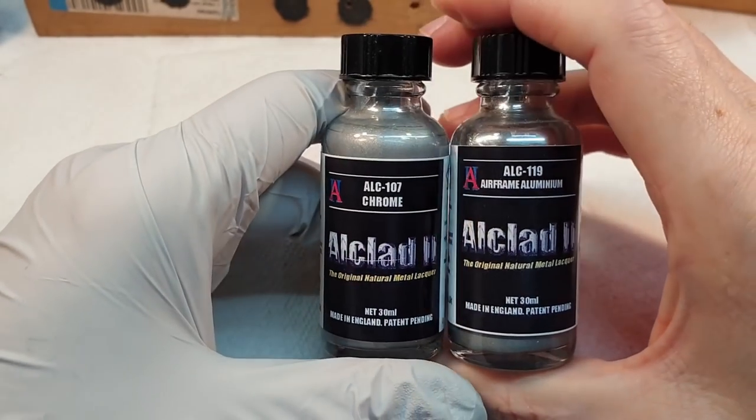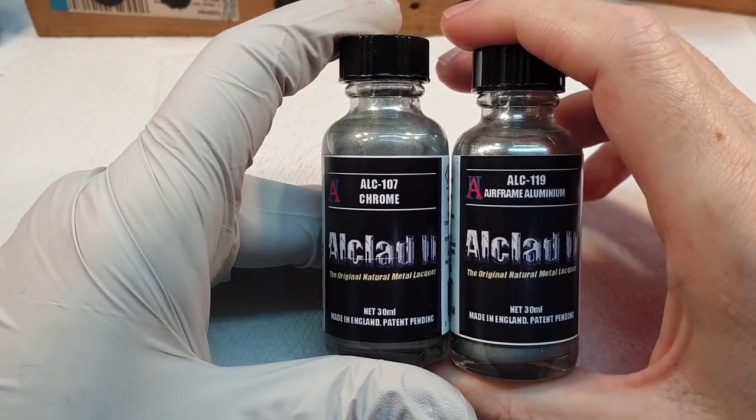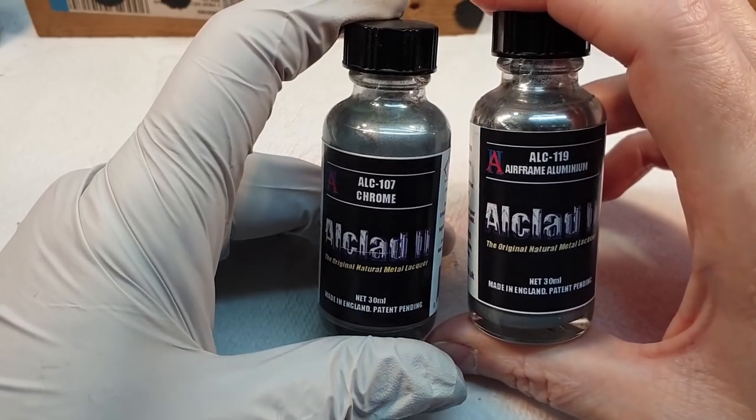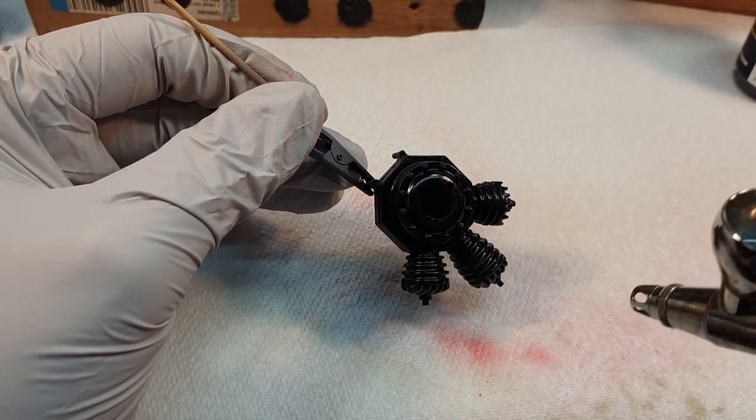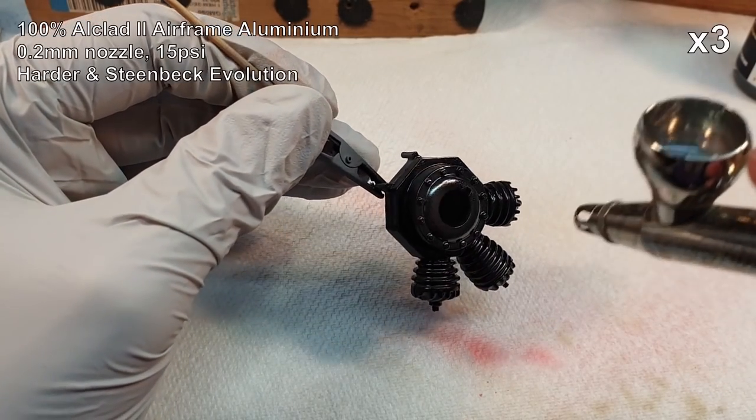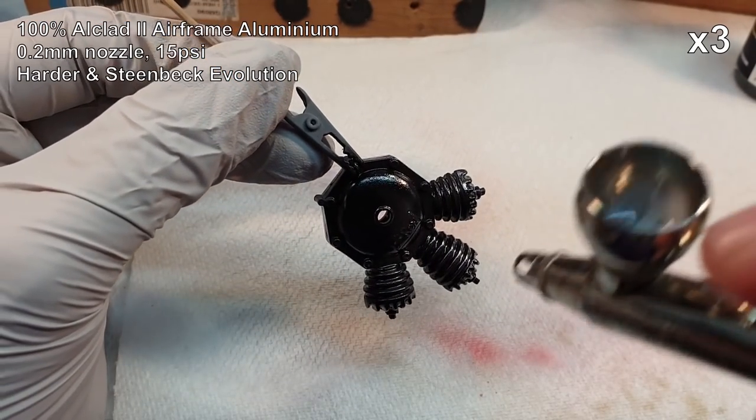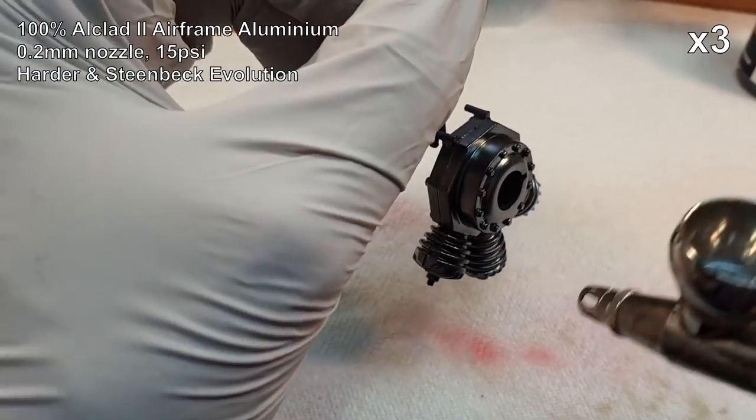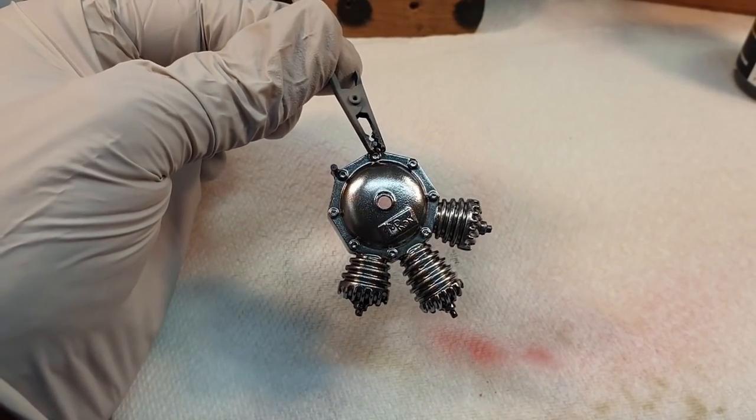All right, now for some lacquers. I'm going to use these all-clad lacquers. These are... I do like these. They give a very, very good finish. So I'm going to use a mix of chrome for some parts and airframe aluminium for other parts. So I will get on and do that. All right, this is the engine. I'm doing this with the airframe aluminium. I don't want it too shiny. And while I'm doing this, I'd just like to take a moment and thank my top-tier patrons, Amy, Edwin, Howard, for their continued support. It is, as ever, much appreciated. Thank you. Doesn't look too bad, does it?